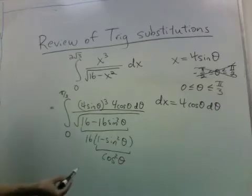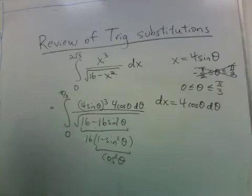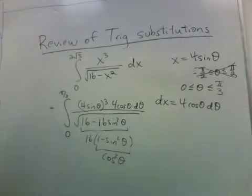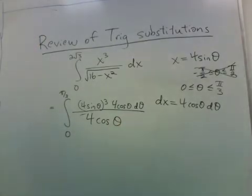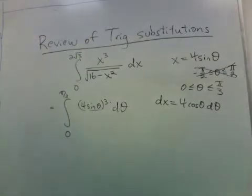So I'm taking the square root of 16 cosine squared. Cosine is positive in this region, so I don't have to worry about absolute values. So I really just have 4 cosine theta in the bottom. And nice things happen. We have that, so we're really integrating 4 sine theta cubed.